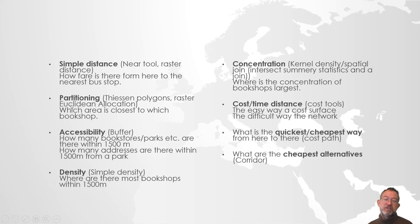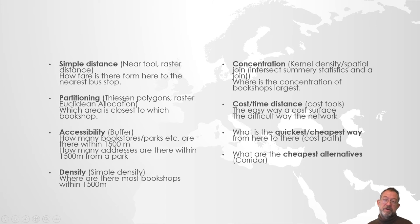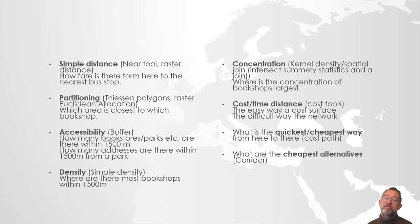Then we will look at partitioning — dividing space into areas that are closest to a given observation. This is also sometimes called allocation, where we allocate space to the object it's closest to. For instance, if we have stations, we can partition Copenhagen into areas closest to each station.